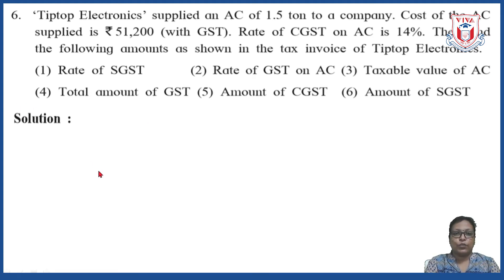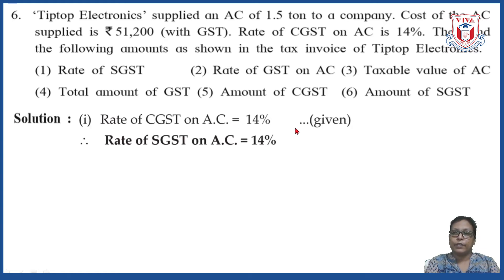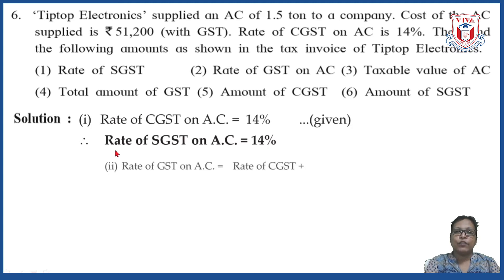First, let us write down what is given to us. The rate of CGST on AC is 14%. From that, we can very easily write down the rate of SGST on AC — the rate of SGST is equal to 14%. So the first question is very easy.